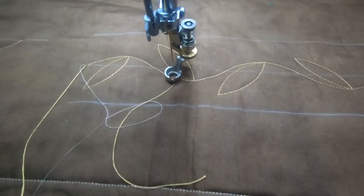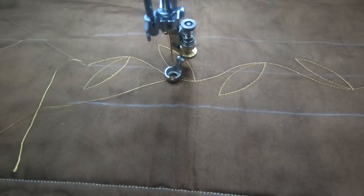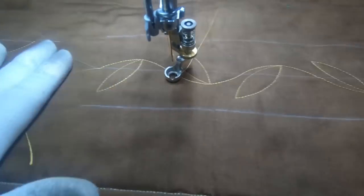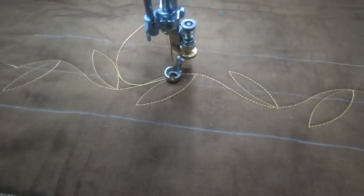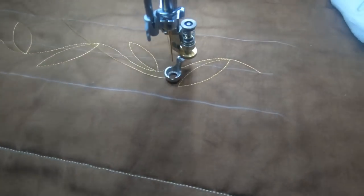There we go. And just by rotating that VersaTool, we can get a little leafy spine and it does not have to be perfect.